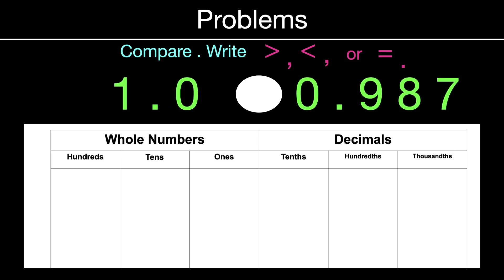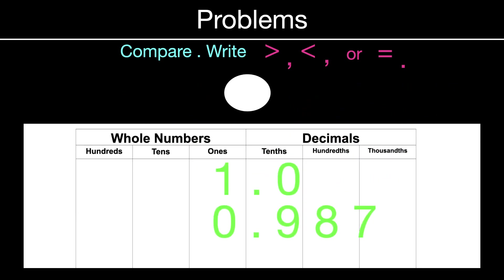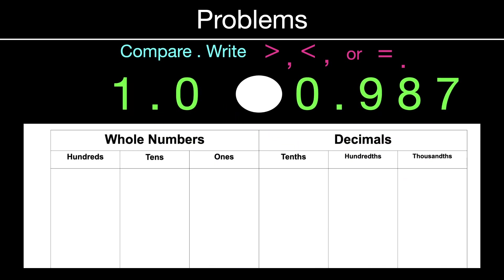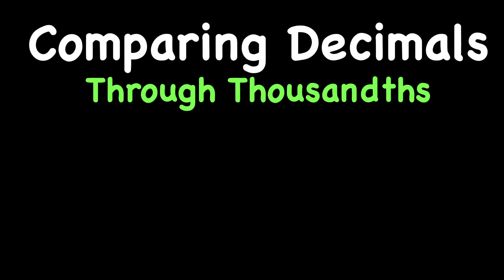One compared to 987 thousandths. You would think that 987 is a lot bigger, but watch what happens when you line up your decimal place values and put in your placeholders. Working from the left — one and zero are not the same. One is greater, which means that number is greater. We put in the greater than symbol, and this reads as one is greater than 987 thousandths.